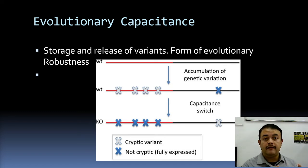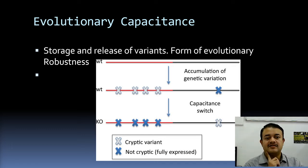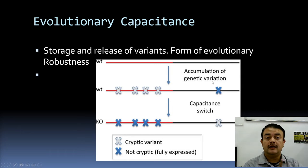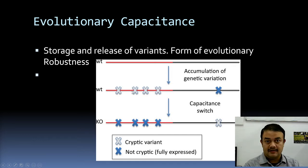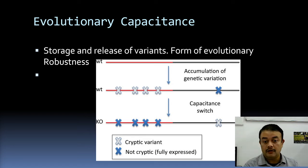Evolutionary capacitance is a form of evolutionary robustness — the ability of a species to bounce back when times are not in its favor, such as during population bottlenecks. The species should be able to survive and not collapse. Genetic variations accumulate mostly through replication errors where correction also fails, but these are not expressed — they remain as cryptic variants. When suitable conditions arise, such as times of calamity or extreme predation, these variants get fully expressed.